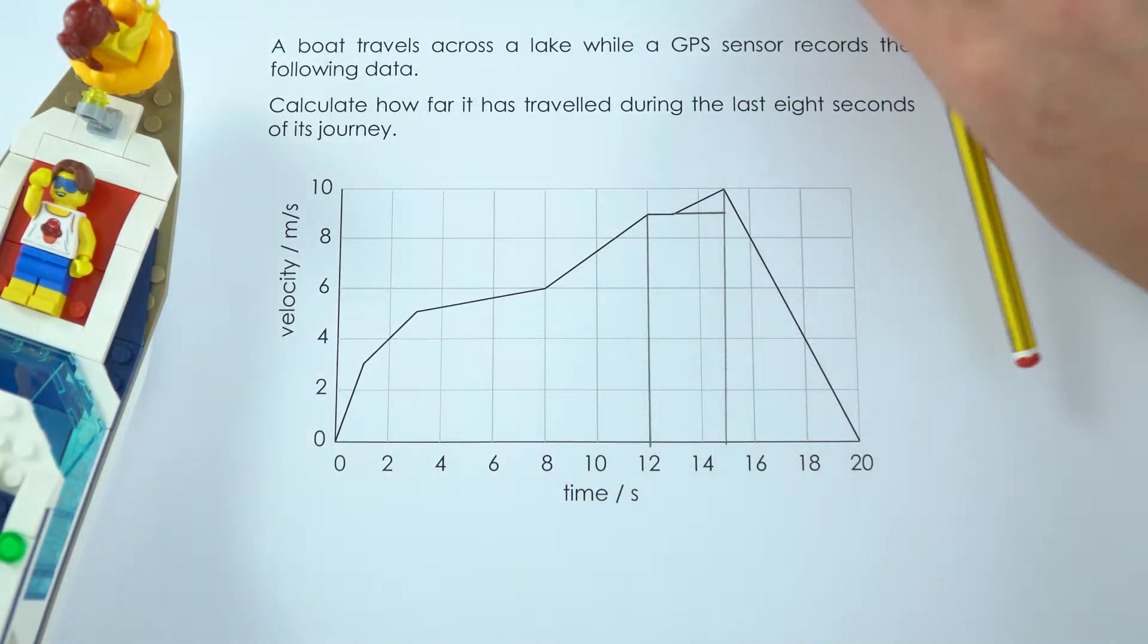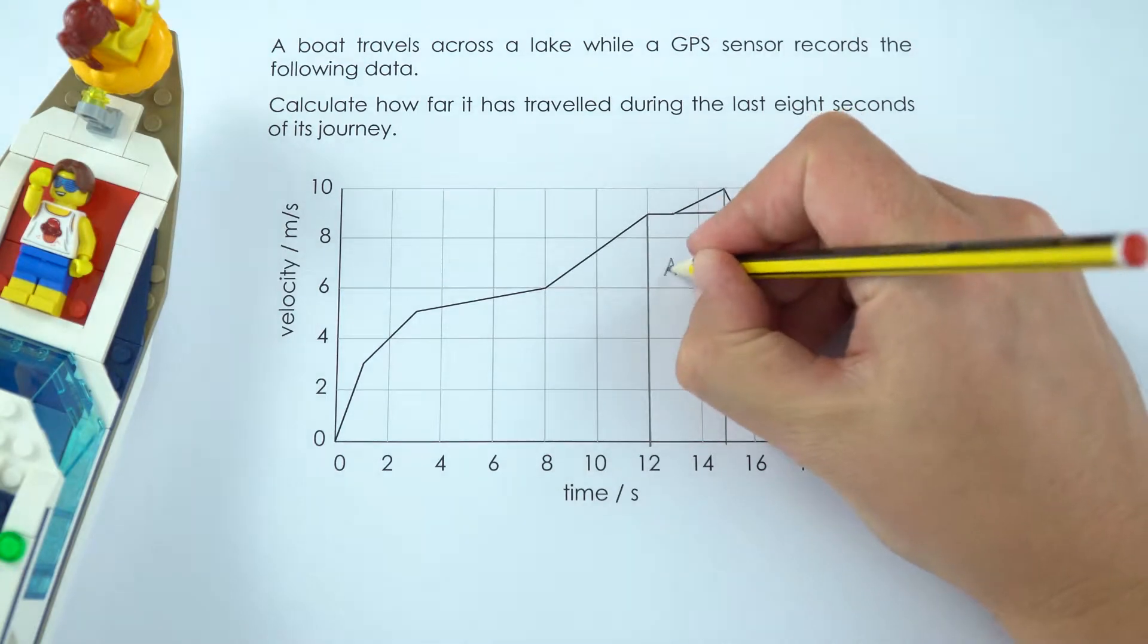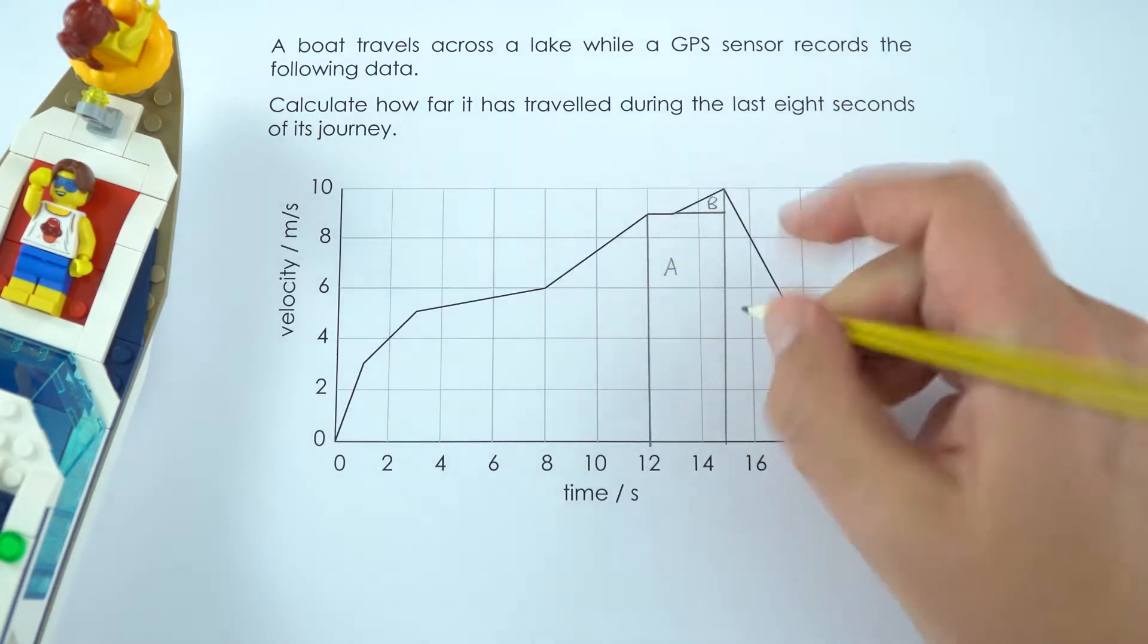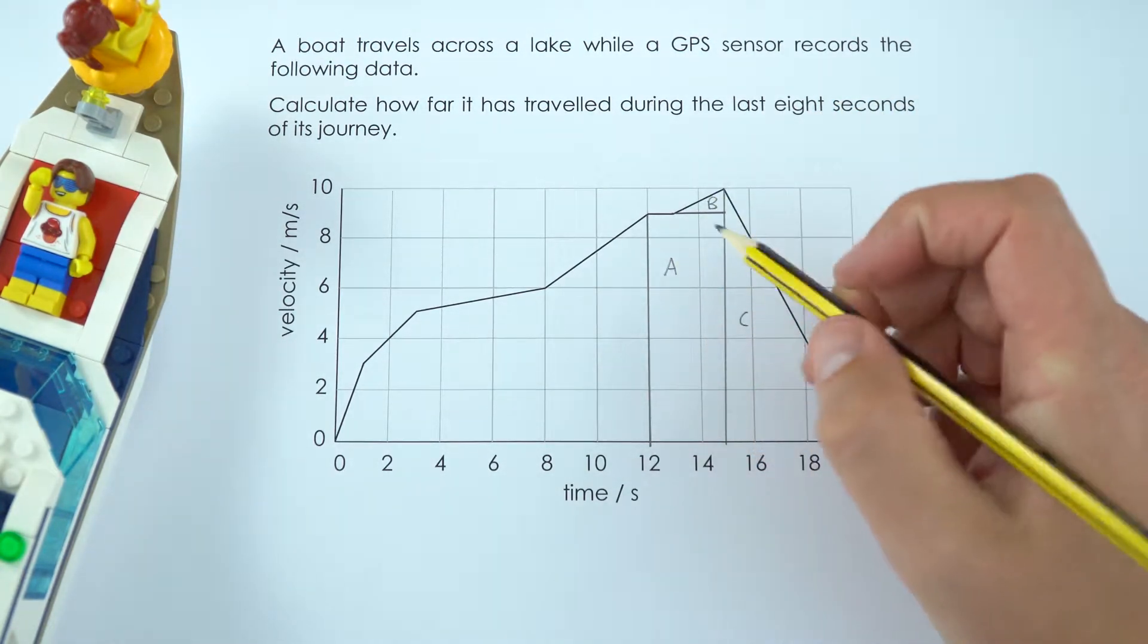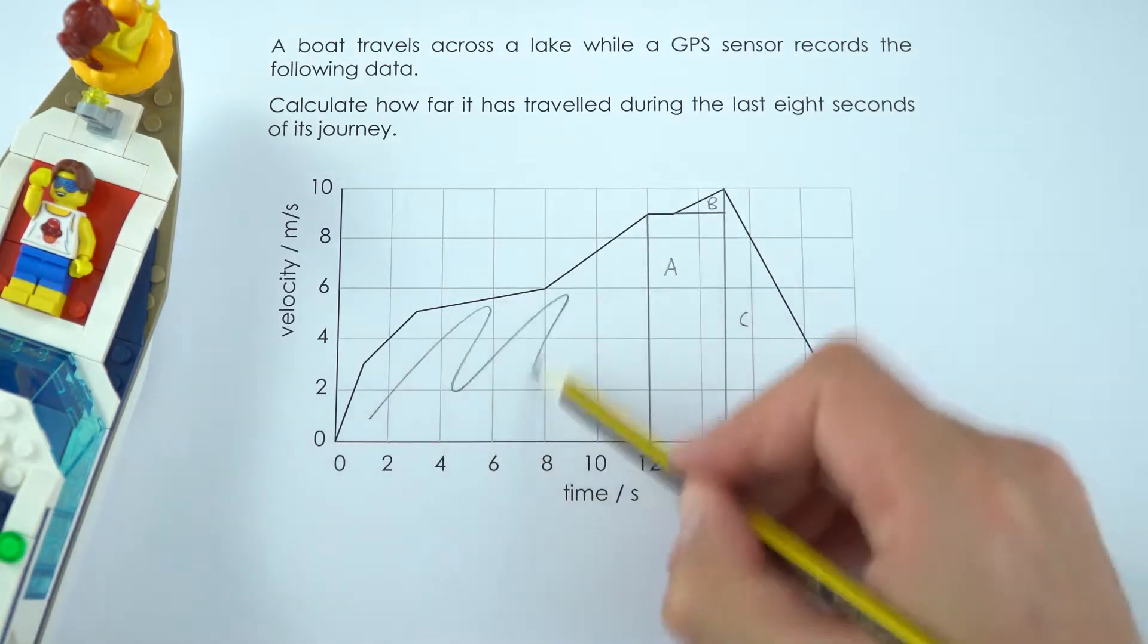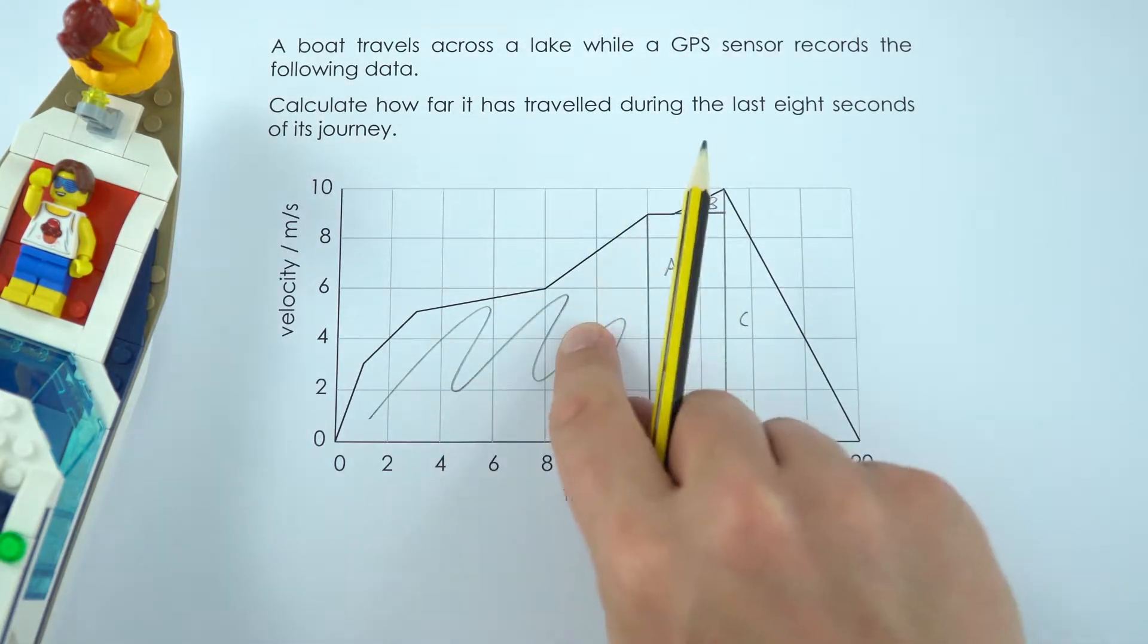Now to help me work out which is which I'm going to call this area A, this area B and that area C. And also so that I don't get confused with this I'm just going to rub that out so I know that I don't need to calculate anything over here.